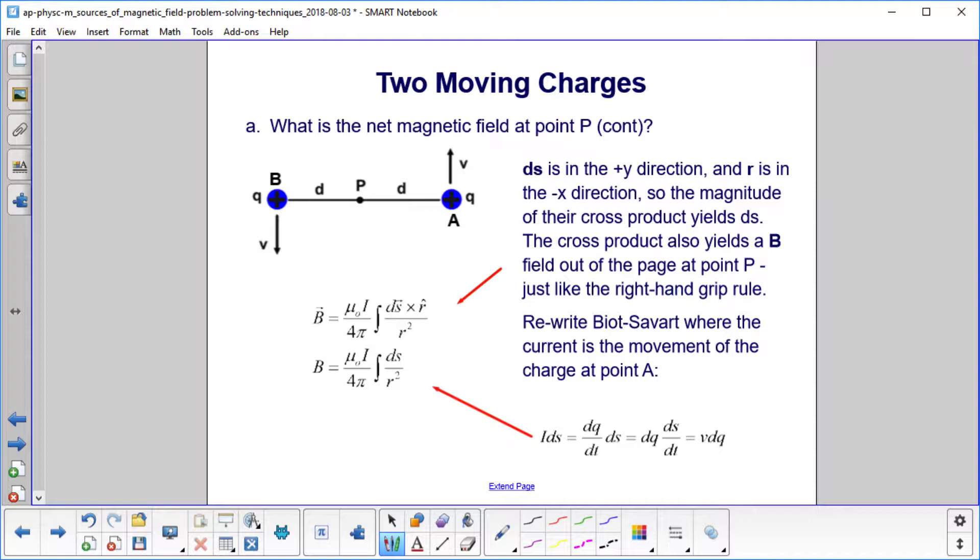Continuing, we will draw the dS vector for this moving charge. It'll be in the direction of its motion. And then we see over here, this will be R hat. Okay, it points to point P.